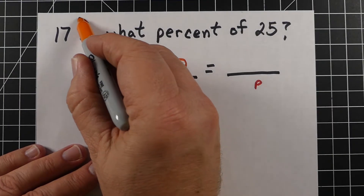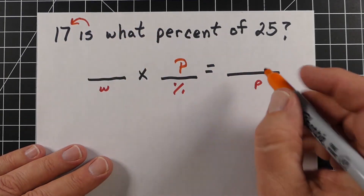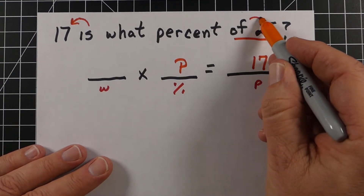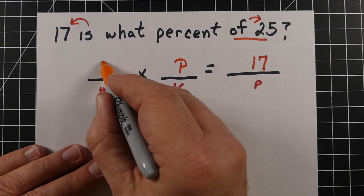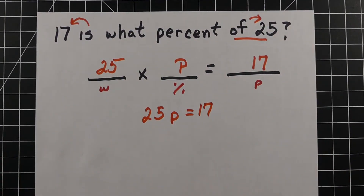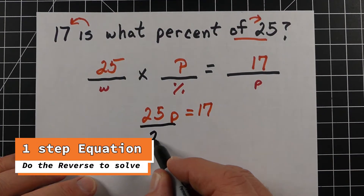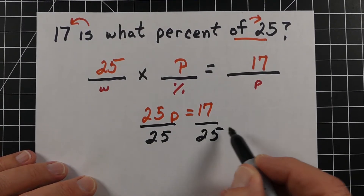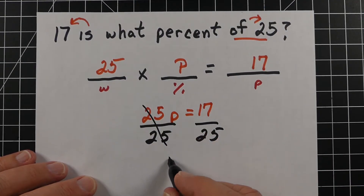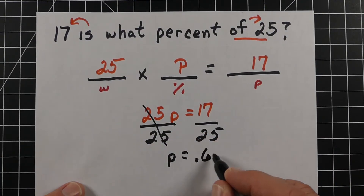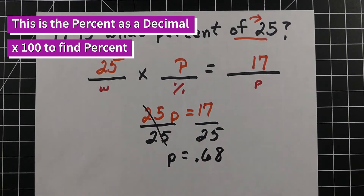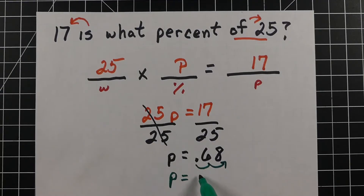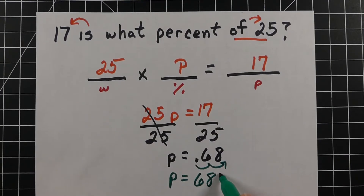Next example: '17 is what percent of 25?' We put variable P for percent. The 17 is the part and 25 is the whole, so 25P equals 17. Dividing both sides by 25 gives P equals 0.68. Moving the decimal two times to the right gives us 68%.